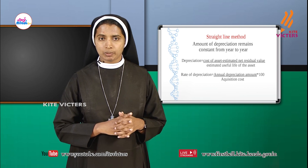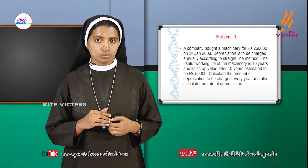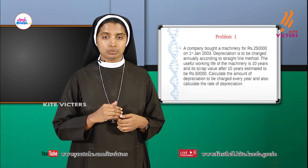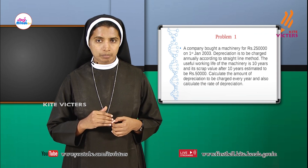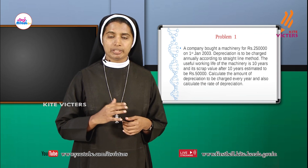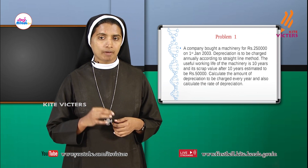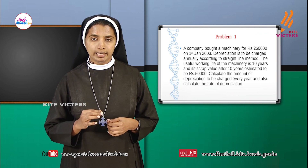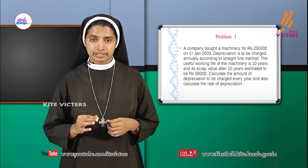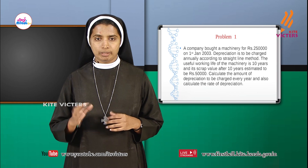Moving on to the problem part. A company bought machinery for ₹2,50,000 on 1st January 2003. Depreciation is charged annually according to the straight line method. The useful working life of the machinery is 10 years and its scrap value after 10 years is estimated to be ₹50,000. Calculate the amount of depreciation to be charged every year and also calculate the rate of depreciation.